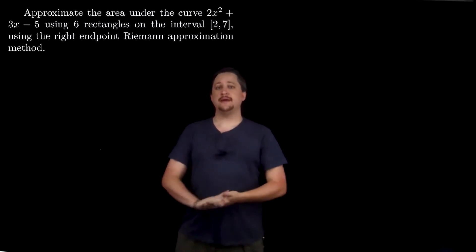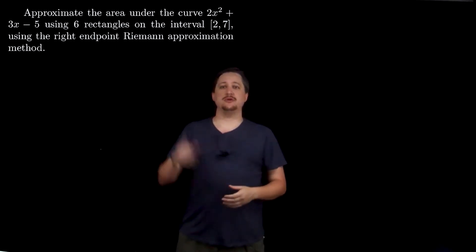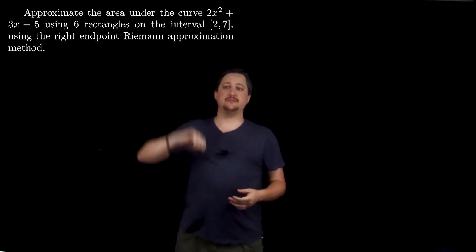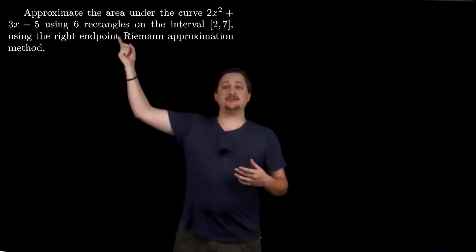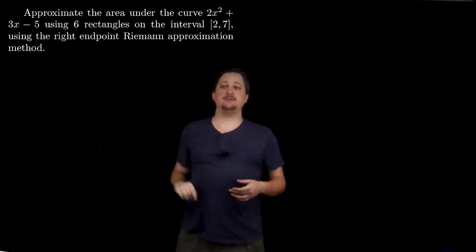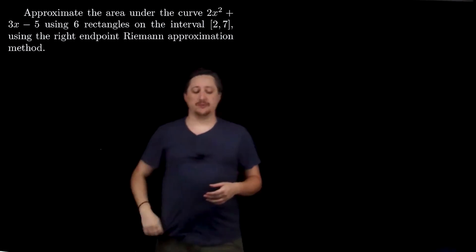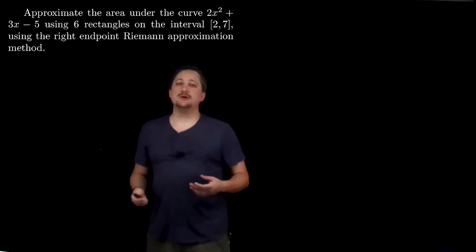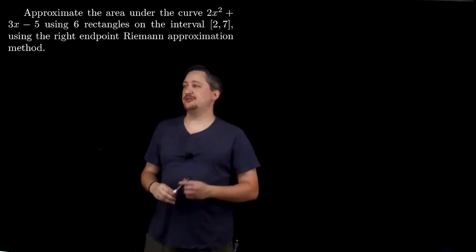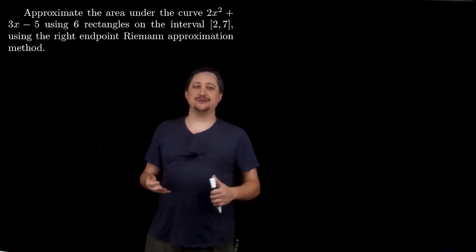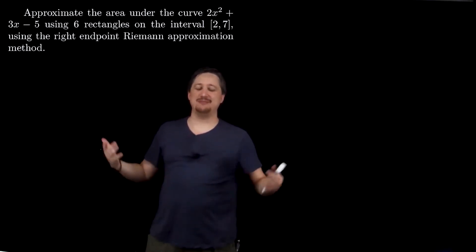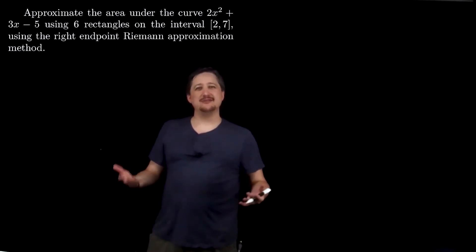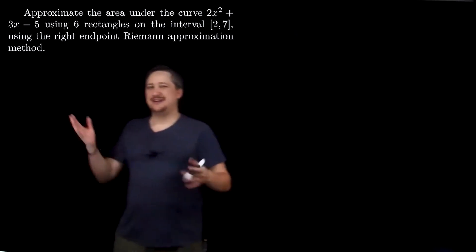In this example we are doing a Riemann approximation. We have our function 2x squared plus 3x minus 5. We're going to use six rectangles, our interval two to seven, and we're using the right endpoint Riemann approximation. I'm going to start with just beginning the process — trying to recreate the formula because my memory is worse than a goldfish, which is technically a misnomer — a goldfish actually has pretty decent memory, but it's an idiom by now.